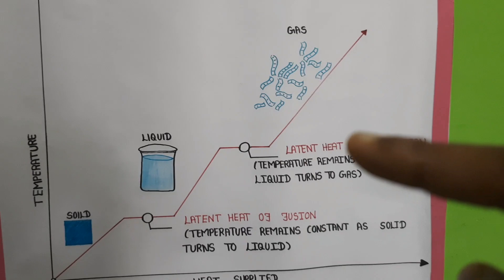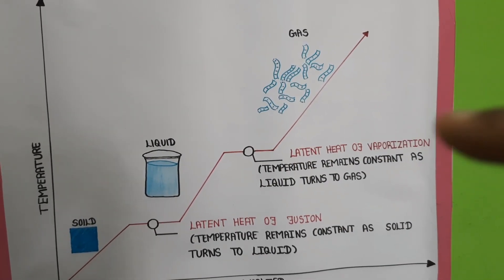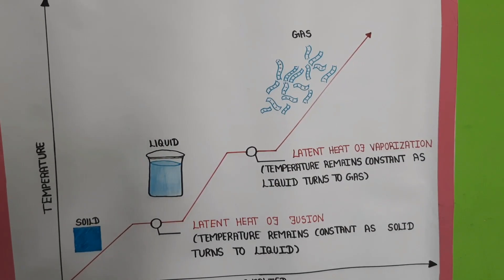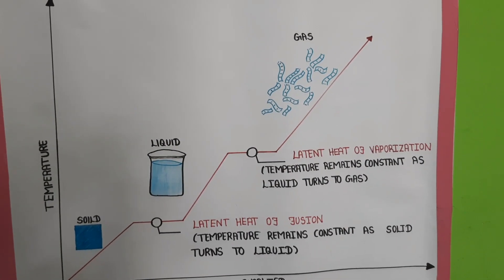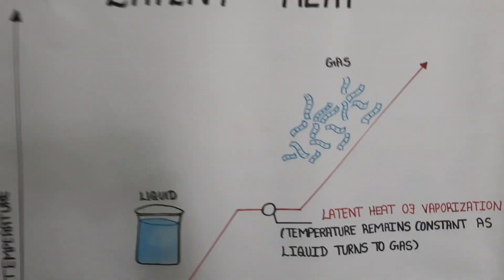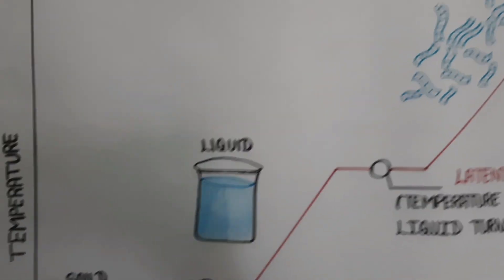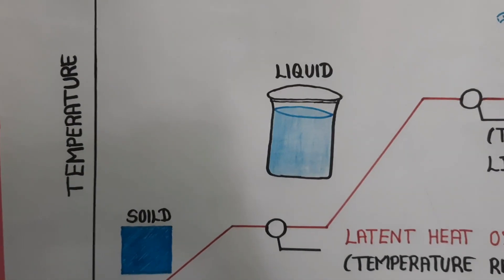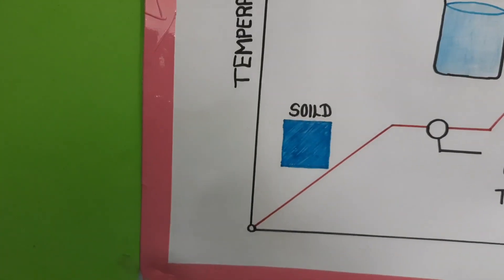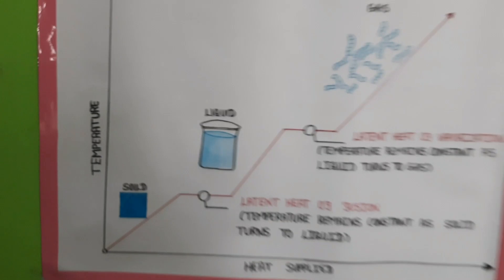When temperature increases, gas is also moving on. In the process of change of state, this is latent heat of fusion and latent heat of vaporization. When liquid turns into gas, it is known as latent heat of vaporization. This is shown in the graph.